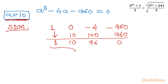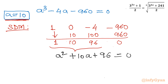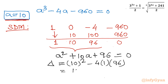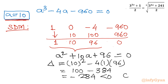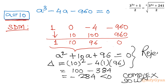From the synthetic division we form the quadratic equation a^2 + 10a + 96 = 0. Checking the discriminant: b^2 − 4ac = 100 − 4(96) = 100 − 384 = −284. The discriminant is negative, so the remaining two roots are complex. Since we are looking for real solutions, we reject this quadratic.